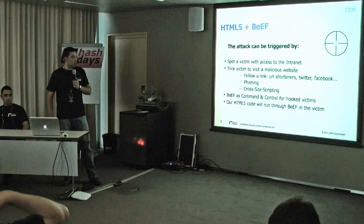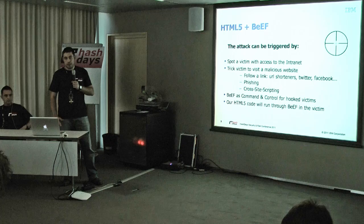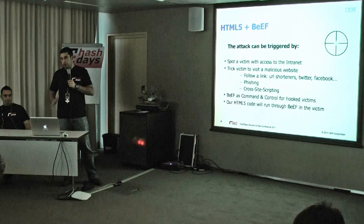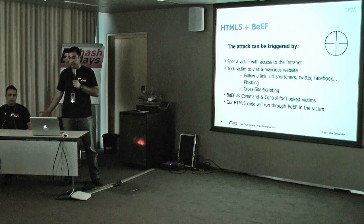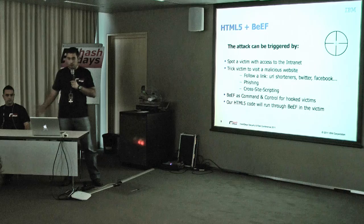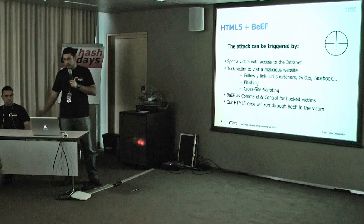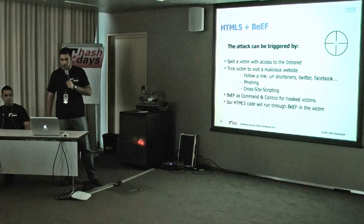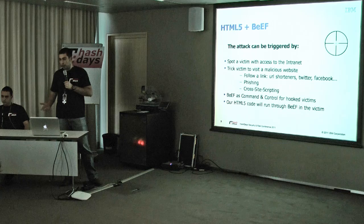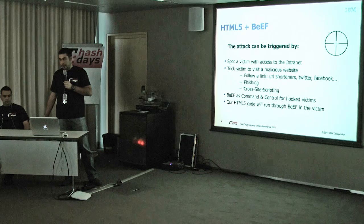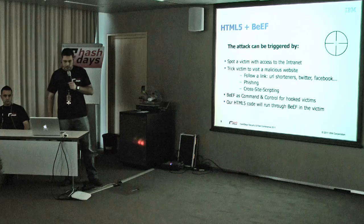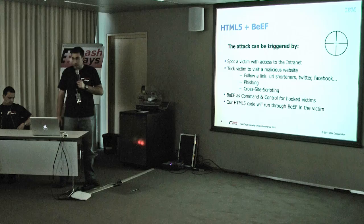Now we have HTML5 and BeEF. How are we going to kick off the attack? We want to spot a person who has access to the intranet, and force them to visit a website that we control where we can run our code. We can use a phishing attack with social engineering - find out which forums the person visits while in the office, kick off the attack from there, or use URL shorteners on Twitter, Facebook, or other social media. The point is to make the person within the intranet run the code we control. We are going to use BeEF as the command and control center, and all the tools we wrote are already part of BeEF as modules. You can grab them in the next release, which will be the 10th of November. Those modules will run with HTML5.